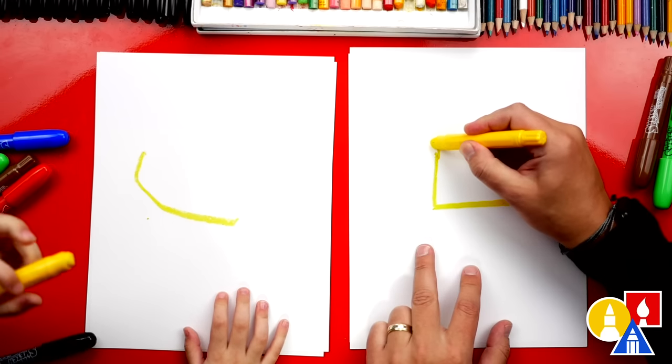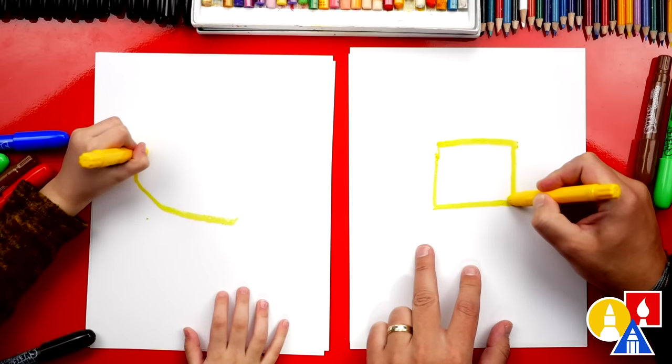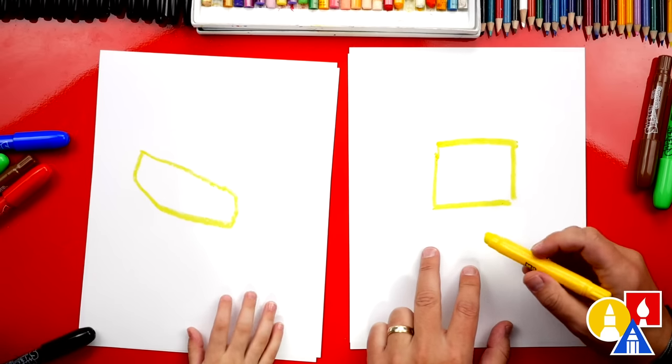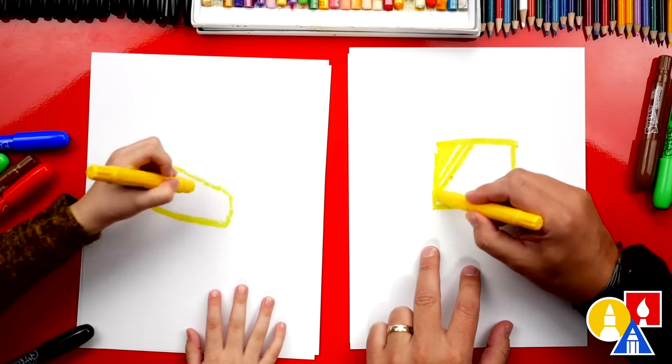Then we're going to draw the top of our square, line over and down. Yes, I love that. Okay, now let's color in our square.